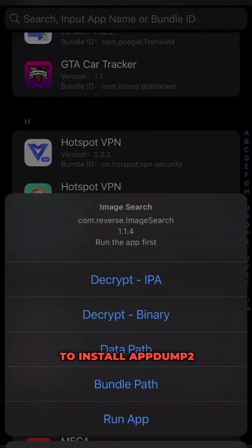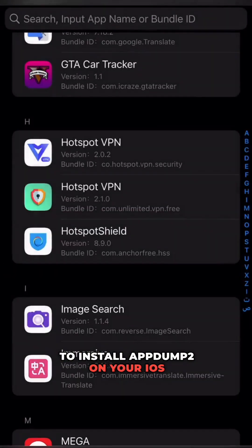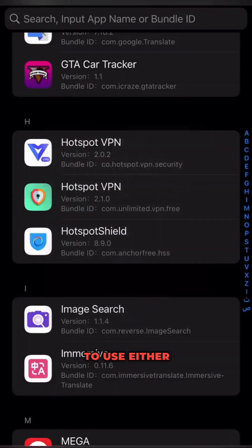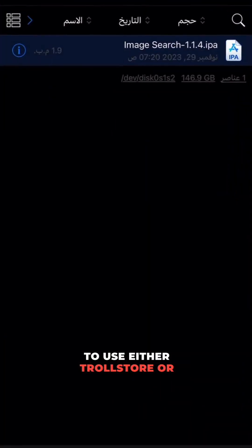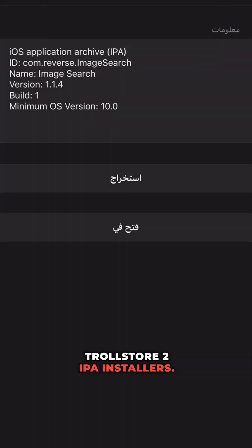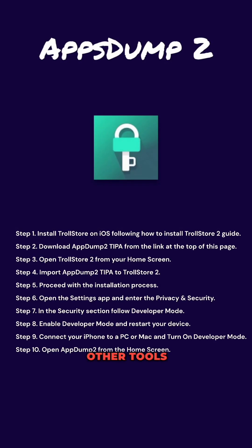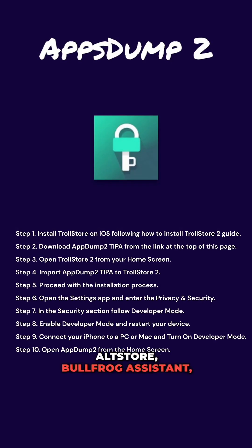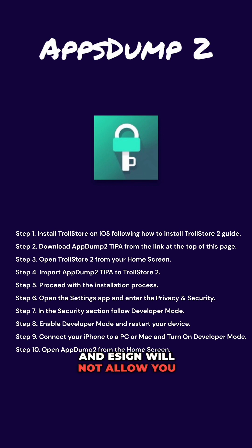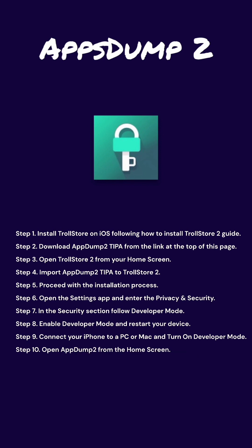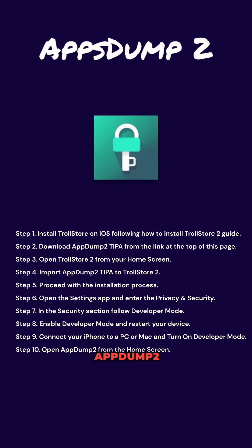To install AppDump 2 on your iOS device, you will need to use either TrollStore or TrollStore 2 IPA installers. Other tools like Sideloadly, AltStore, Bullfrog Assistant, and eSign will not allow you to decrypt installed apps or games. Detailed instructions on how to install AppDump 2 can be found in the description below.